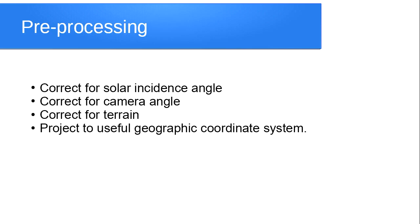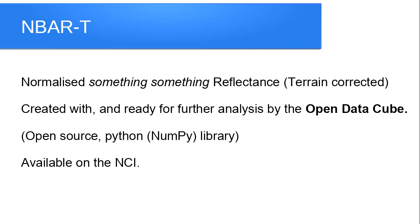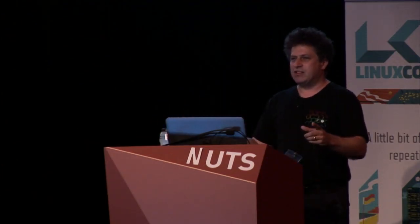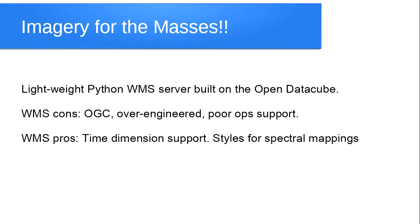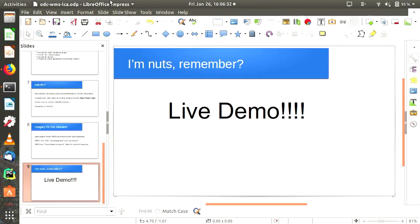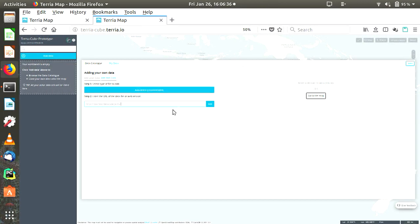The data is open — you can download it from NASA — but it needs pre-processing: adjusting for the satellite's angle to the ground, the sun's angle, terrain, and projective coordinate systems. Geoscience Australia has done all that for us with a normalized reflectance dataset created with the Open Data Cube, an open-source Python platform based on NumPy. The data — all 100-odd terabytes of it — is on the NCI. How many people have accounts on the NCI? A few. How many would be interested in exploring this data on their browser? That's where I come in — I've written a lightweight Python WMS server to sit on top of the Open Data Cube.